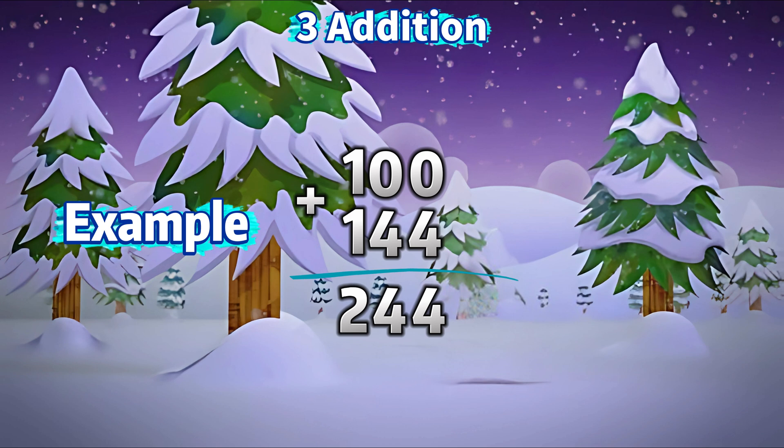Now let's add the first column. 0 plus 4 is equal to 4. And let's add the second column. 0 plus 4 is equal to 4. And next, the third column. 1 plus 1 is equal to 2.